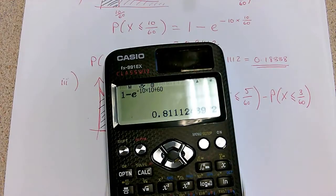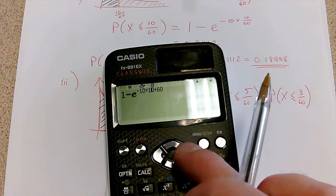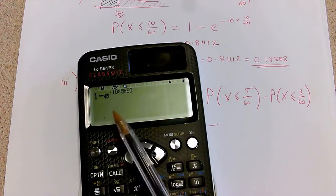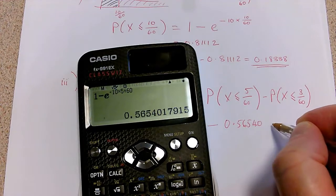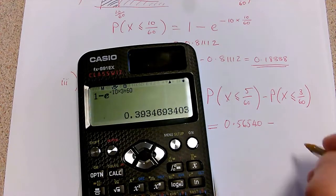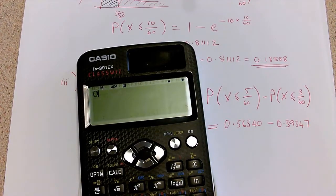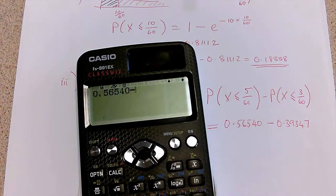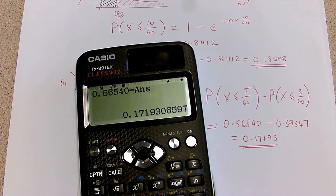I'll adapt the calculator work I did for 10 minutes, just changing the numerator. For 5/60: the answer is 0.56540. Then for 3/60: the answer is 0.39347. Doing the subtraction — 0.56540 minus 0.39347 — gives a final answer of 0.17193. I've finished part D.